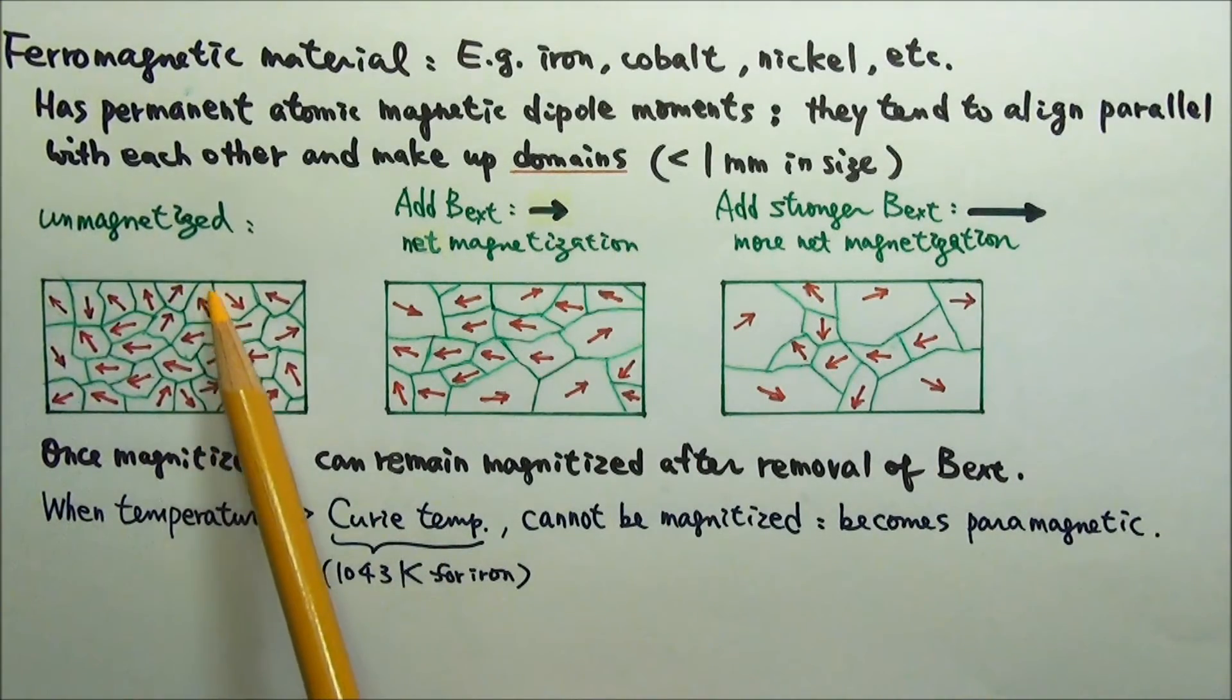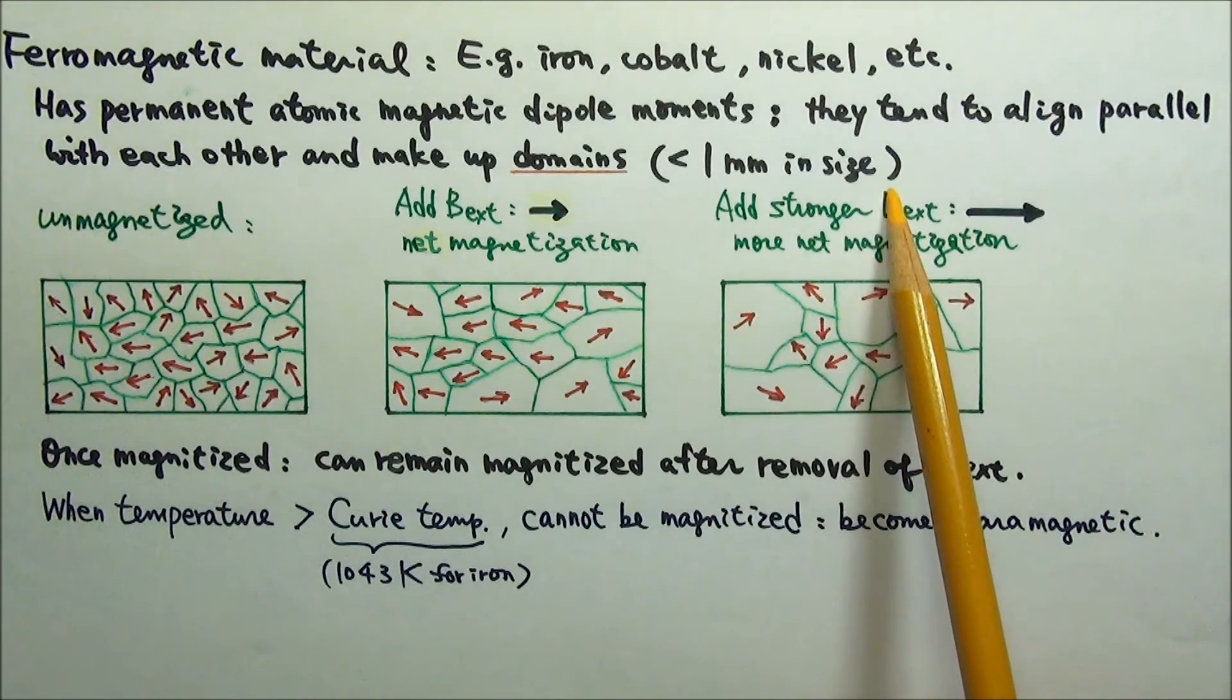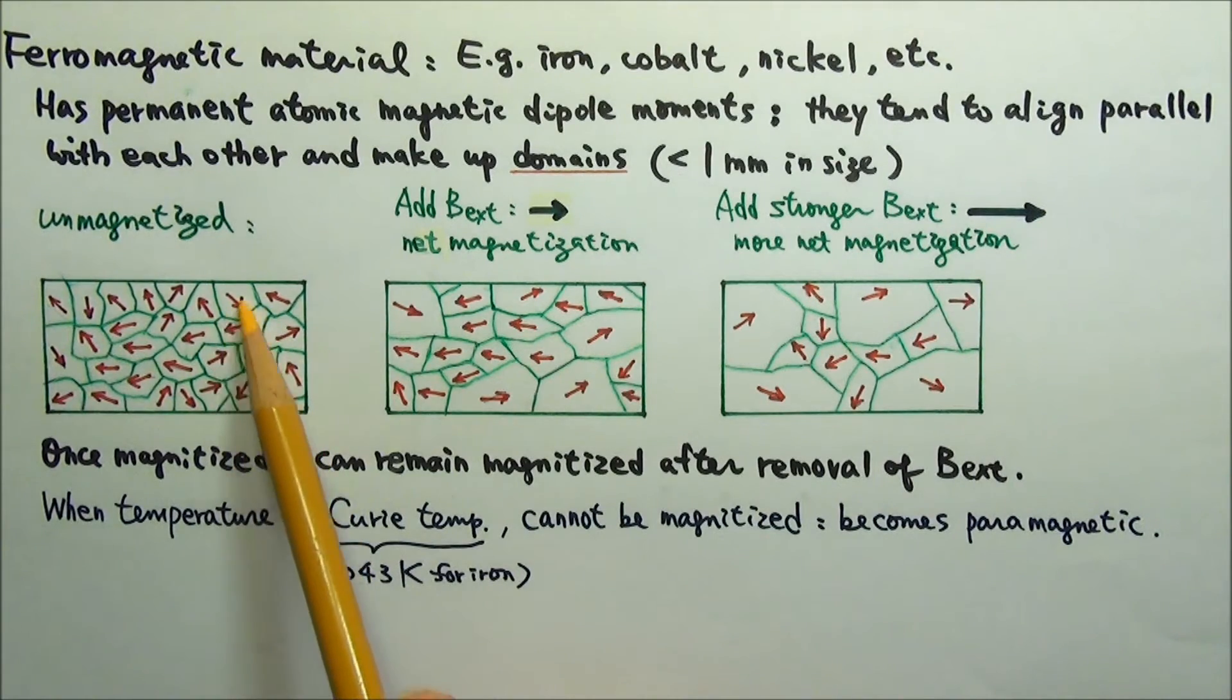These are domains. Each domain is usually less than a millimeter in size. Within a domain, magnetic moments are aligned.